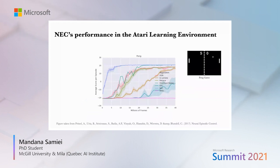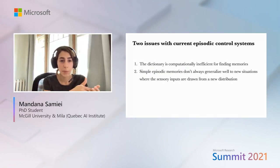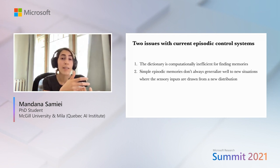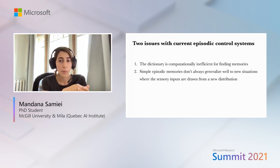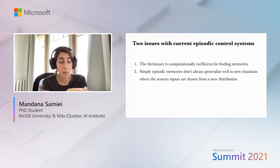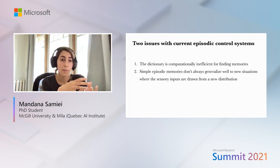As expected, the reuse of experience brings the immediate advantage of better sample efficiency. So far, the main approach to implement episodic memory has been using a dictionary data structure, which has linear search time and is not computationally efficient when the number of stored items is large. Also, standard implementations of episodic memory do not generalize well to new tasks where the sensory inputs differ from the distribution the agent was trained on, or when available data is limited.